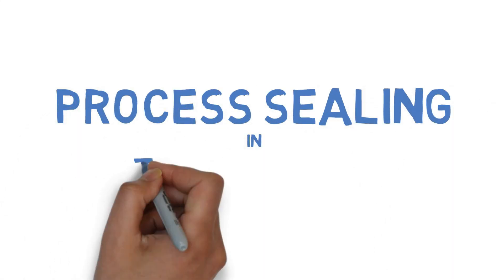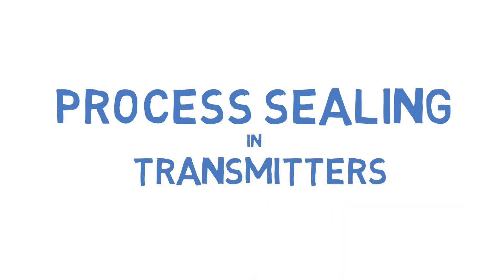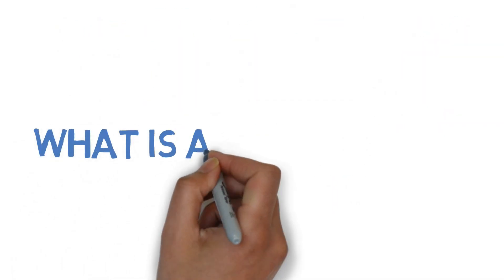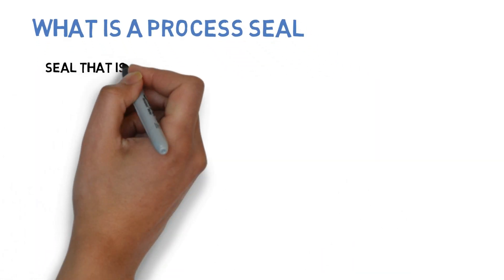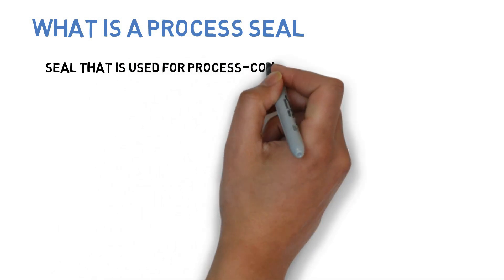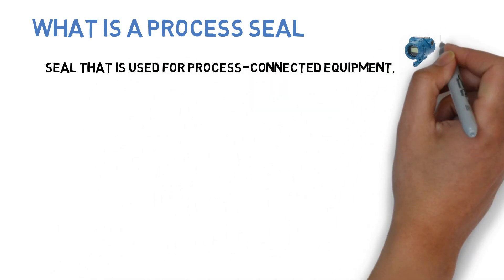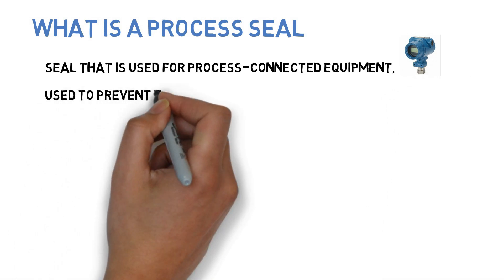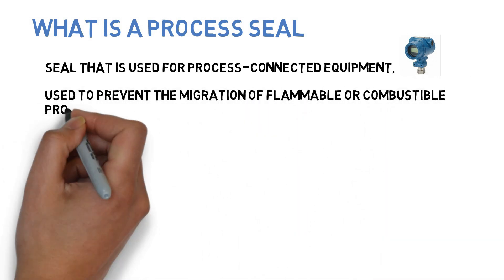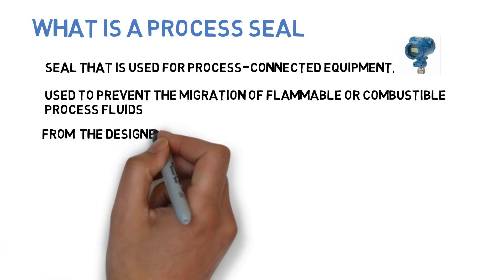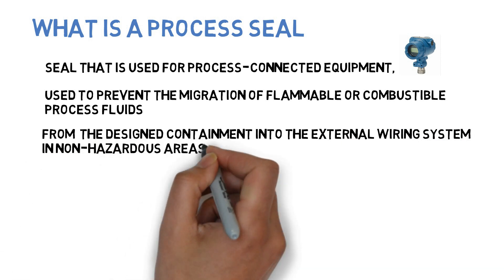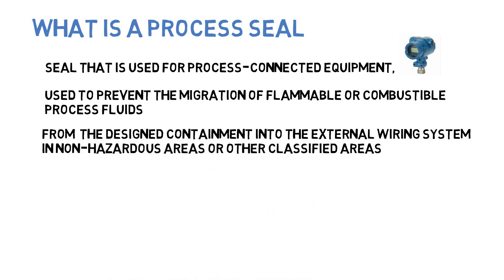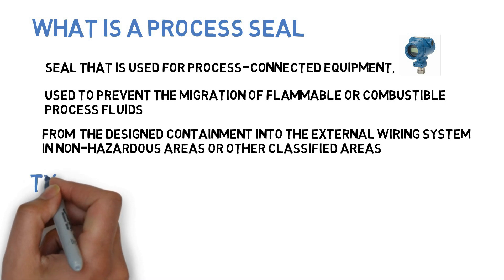In this video we are going to see about process sealing in transmitters. A process seal is a seal that is used for process connected equipment, used to prevent the migration of flammable or combustible process fluids from the designed containment into the external wiring system in non-hazardous areas or other classified areas.